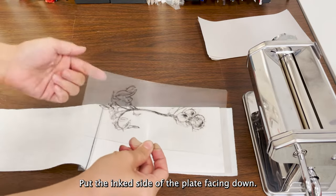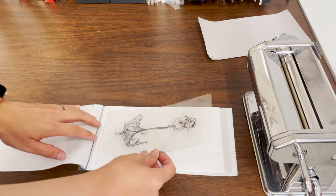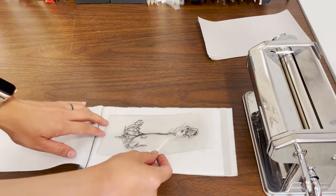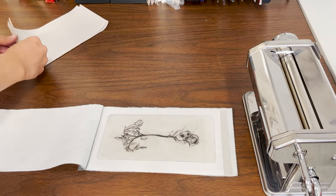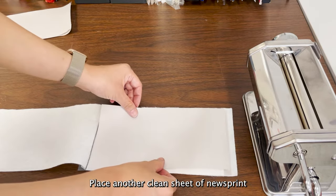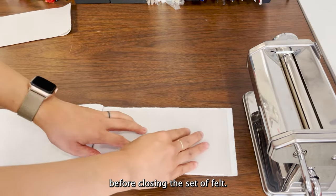Put the inked side of the plate facing down. Place another clean sheet of newsprint before closing the set of felt.